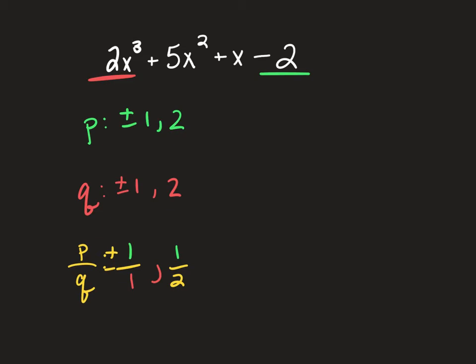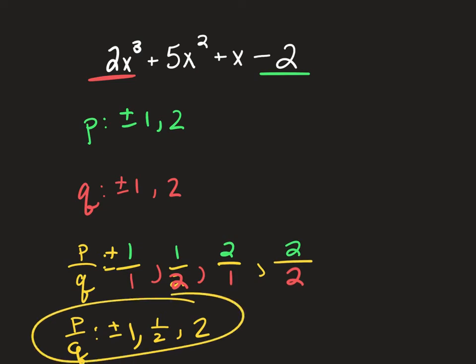I'm going to make that red. And then we're going to take our 2 and divide it by 1. And then we're going to also take our 2 and divide it by our other 2. All right, so then you need to reduce any of these that we can. So 1 divided by 1 is 1. Then we have a half. 2 divided by 1 is 2. 2 divided by 2 is 1. So since that one's already there, you don't have to write it in your list twice. So, your final list would just be plus or minus 1, 1 half, and 2.